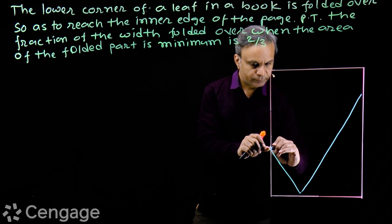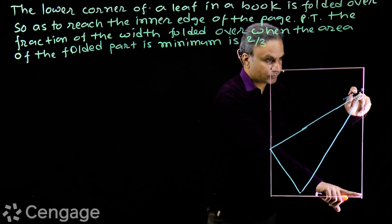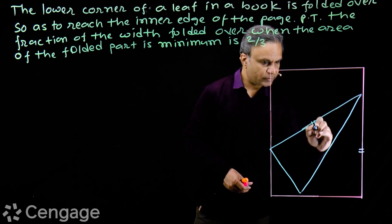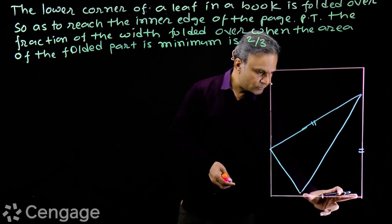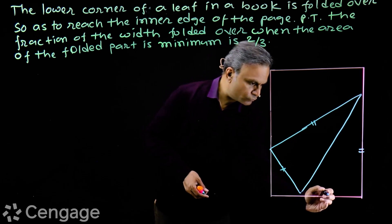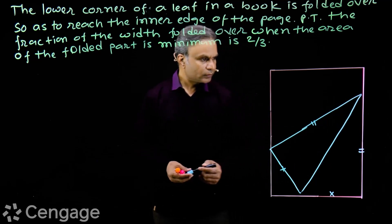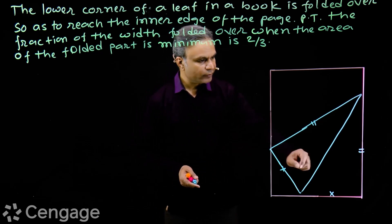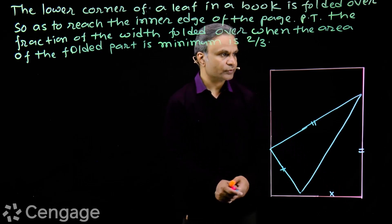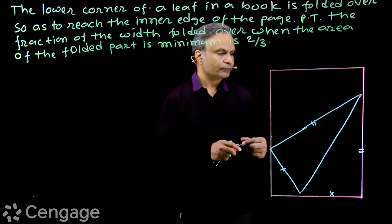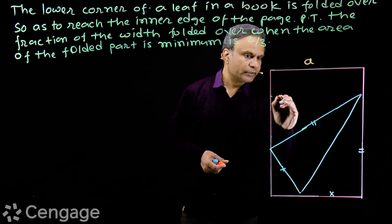This length and this length are equal. After folding, this part comes here and this part comes here, so these two lengths are equal. This is the folded part, which is a triangle. We have to prove that when the area of this triangle is minimum, the folded width is two-thirds of the actual width. Suppose the actual width is 'a'.